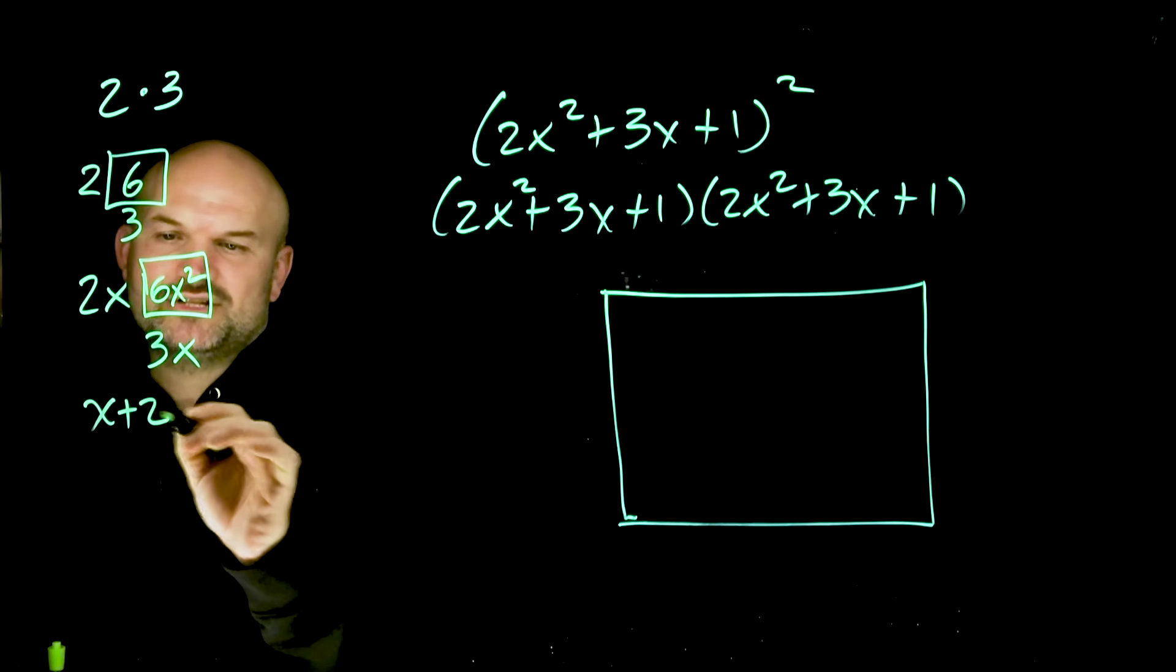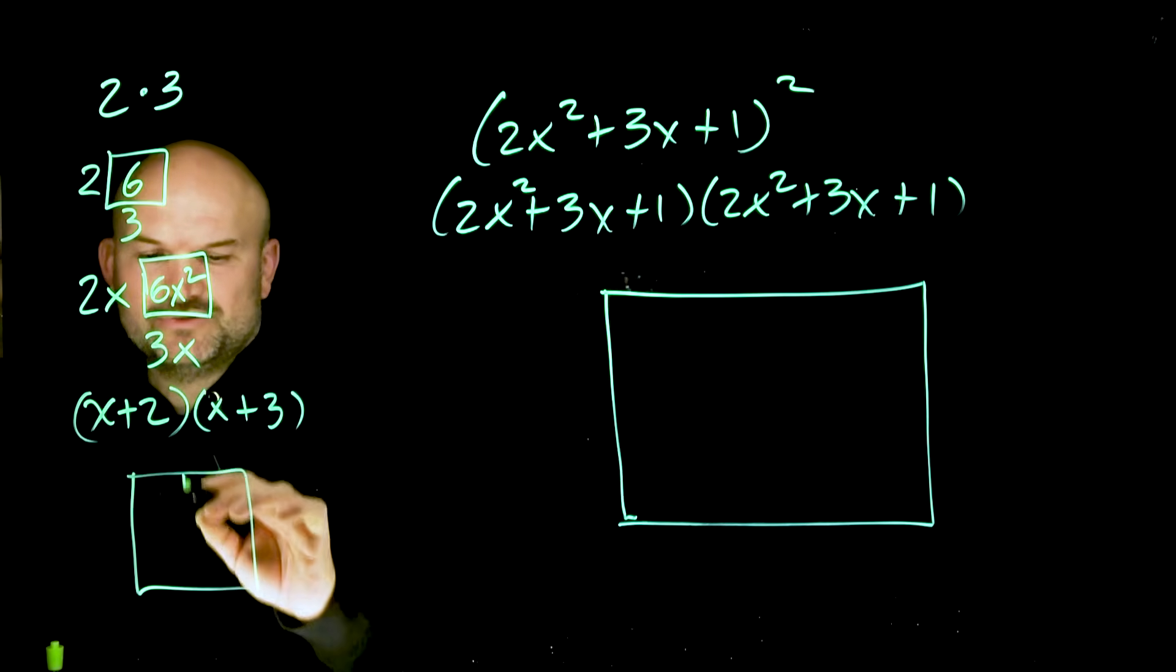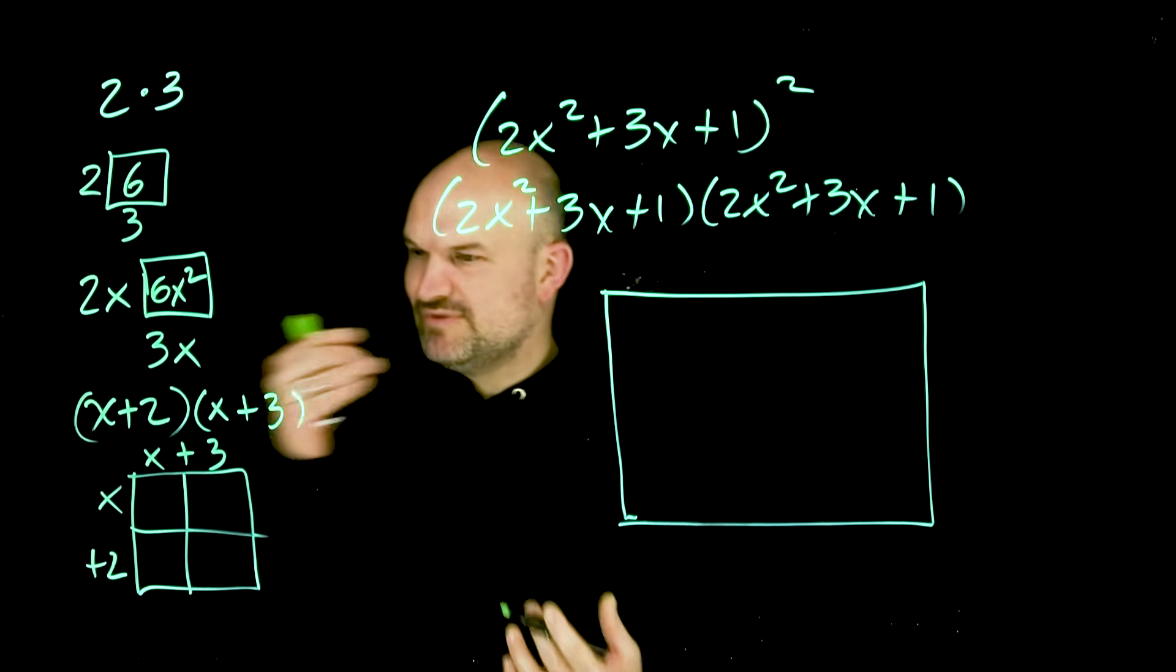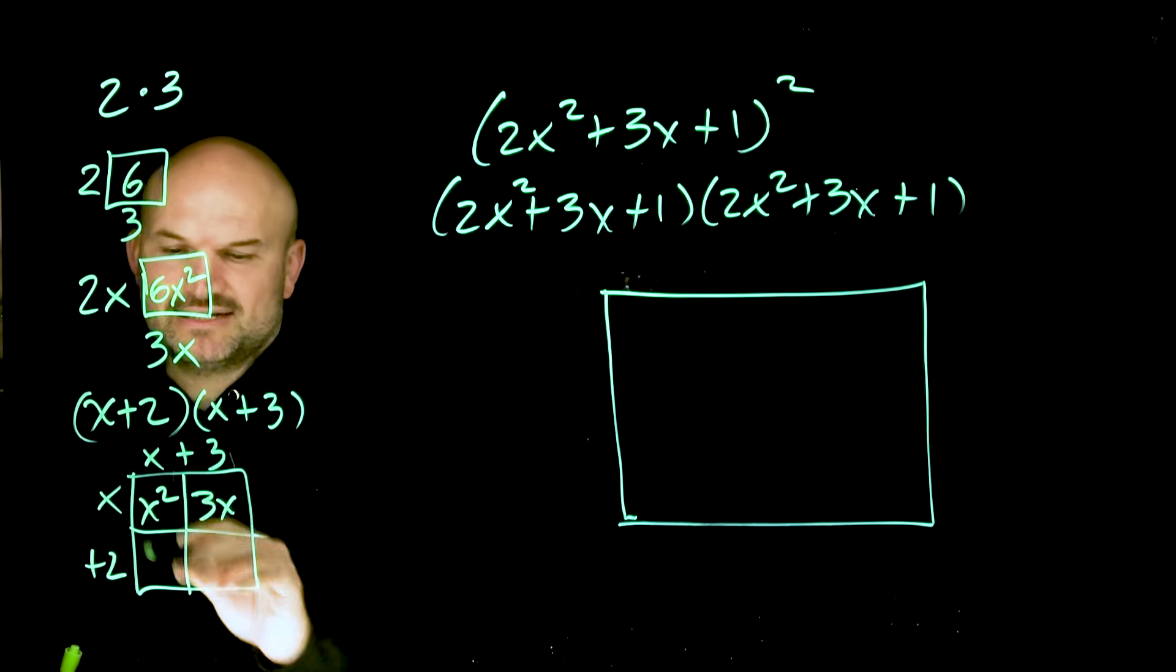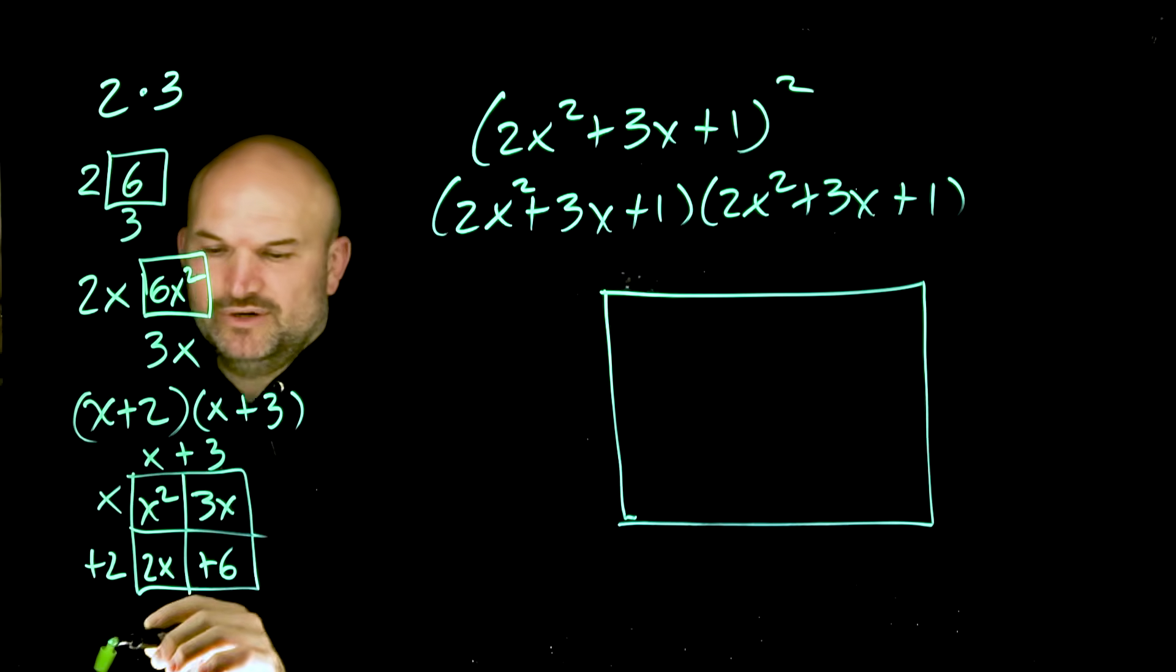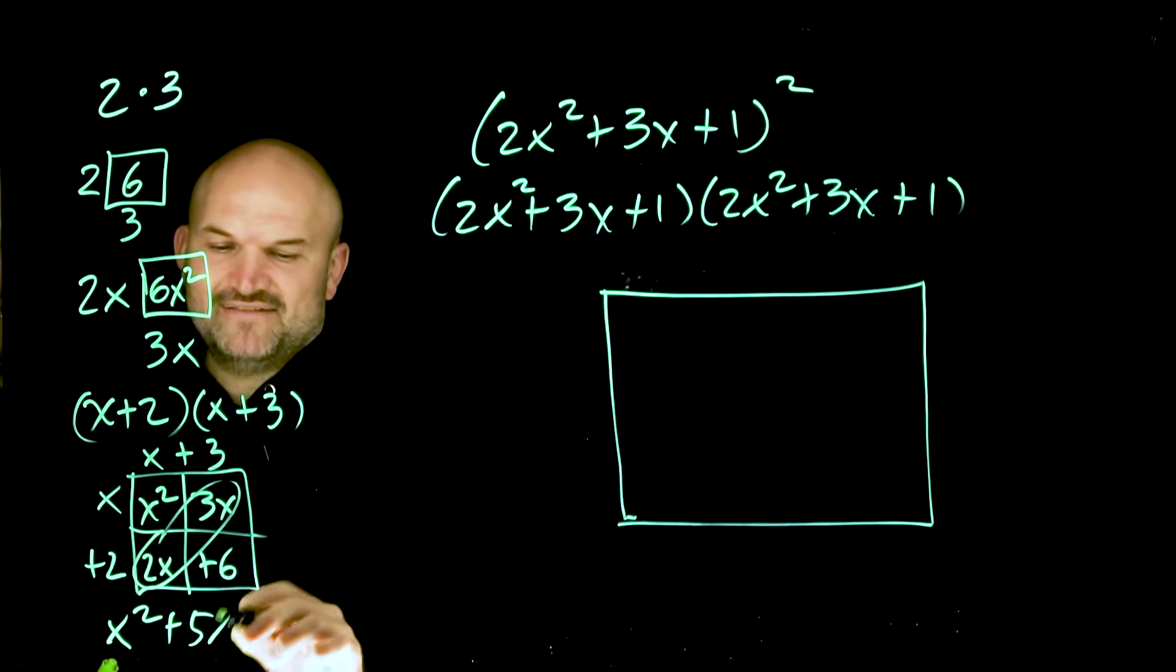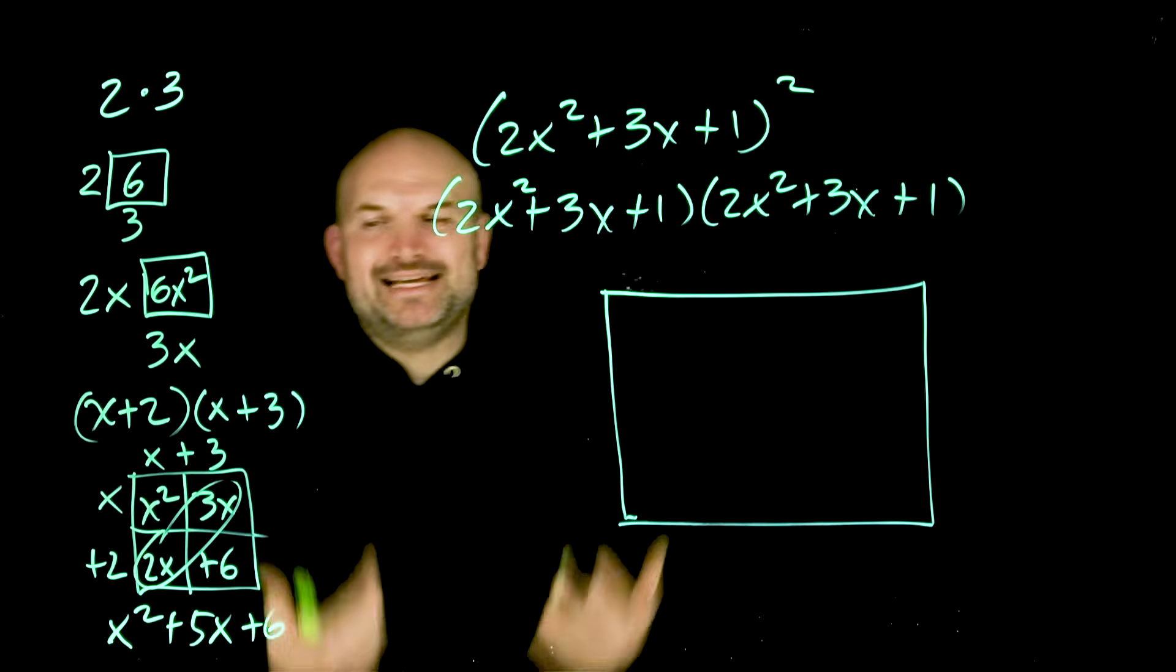If I had (x + 2) times (x + 3), we could still do that. We create this box and have x + 2 and x + 3. All we do is find the area of each box, which is x², 3x, 2x, and 6. If you multiply that out using FOIL or the distributive property, you get x² + 5x + 6. But what's nice about the box method? It keeps things organized.